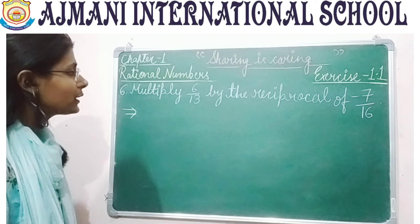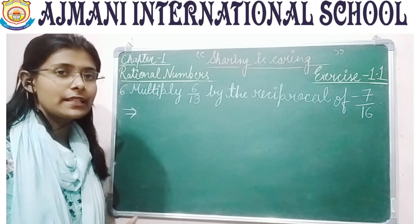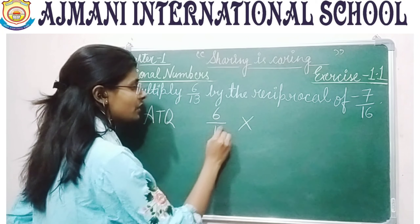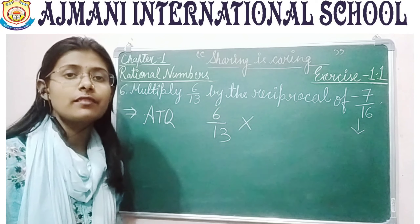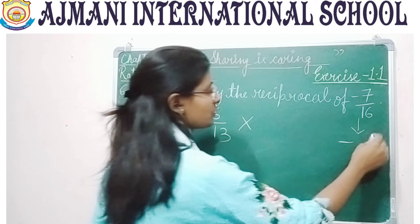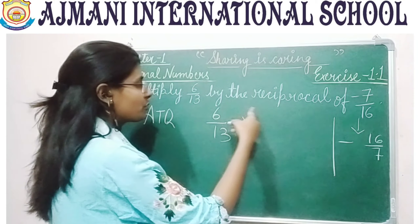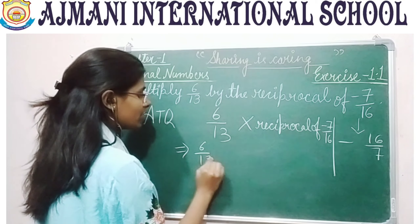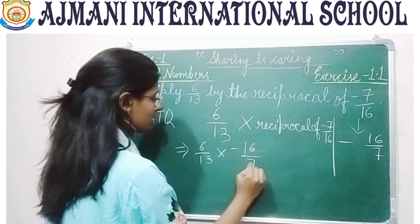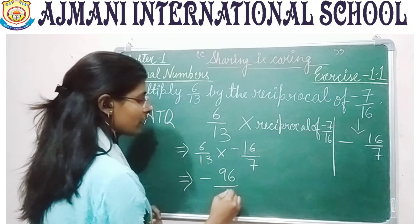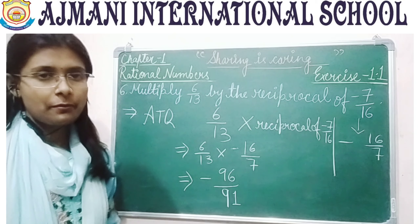Question number 6: multiply 6 by 13 by the reciprocal of minus 7 by 16. The reciprocal is same in sign but the numerator and denominator exchange places, so the reciprocal of minus 7 by 16 is minus 16 by 7. So we calculate 6 by 13 multiplied by minus 16 by 7. Multiplying gives minus 96 divided by 91 as the answer.